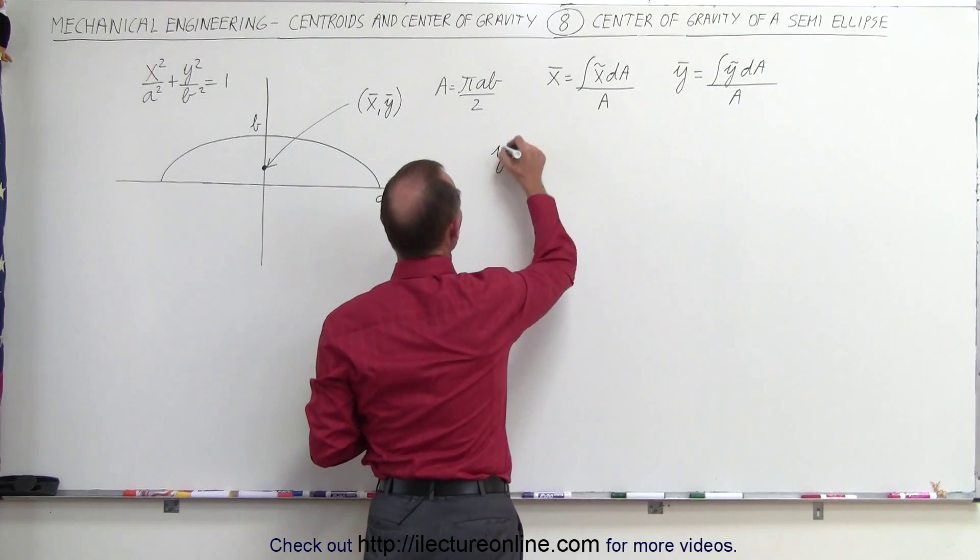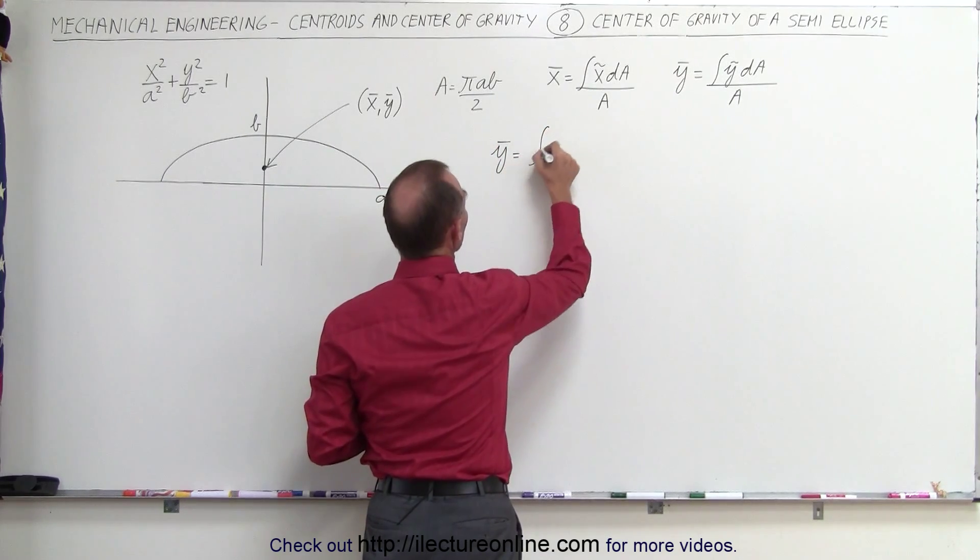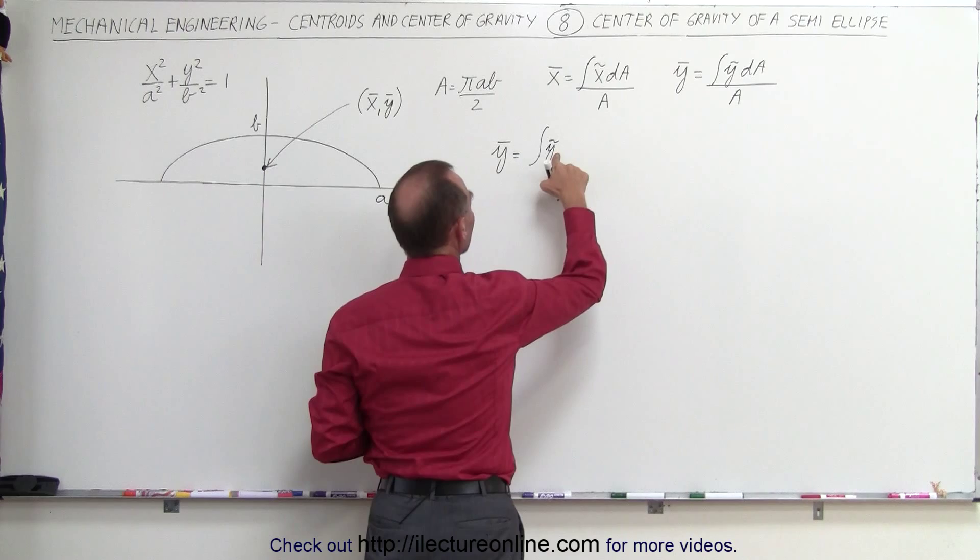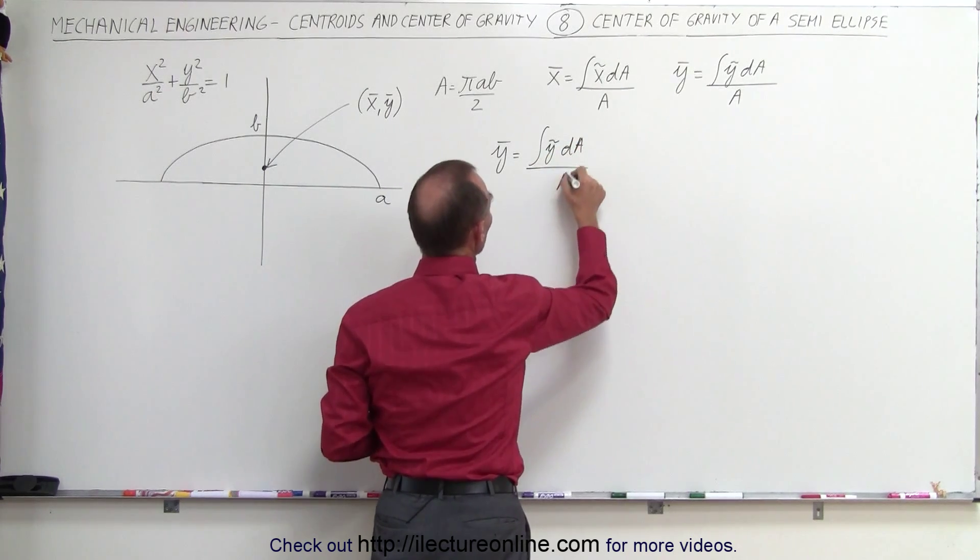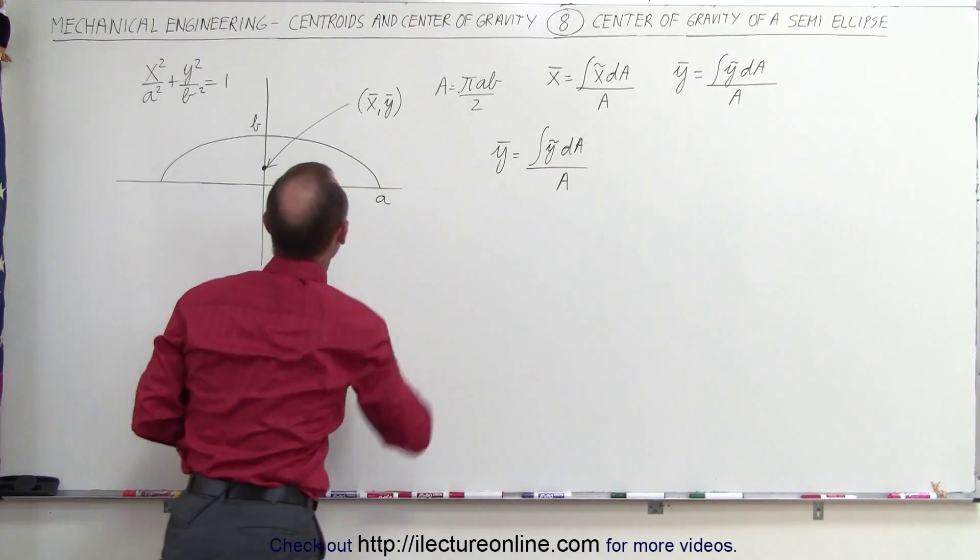So we can say that the y-coordinate is equal to the integral of the y-coordinate of each individual little piece times the area of each piece divided by the total area of the semi-ellipse.